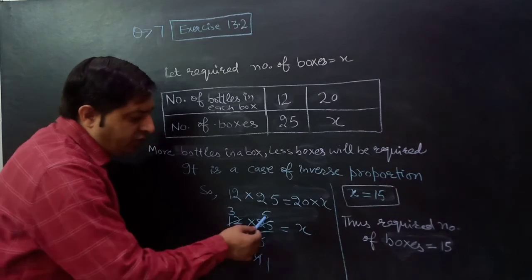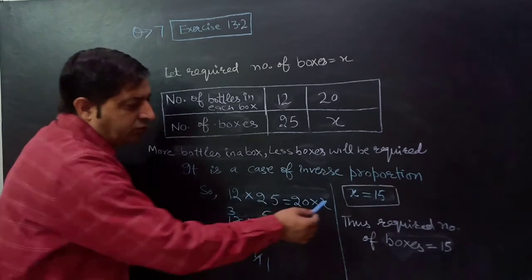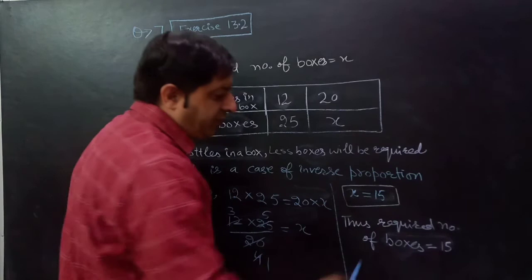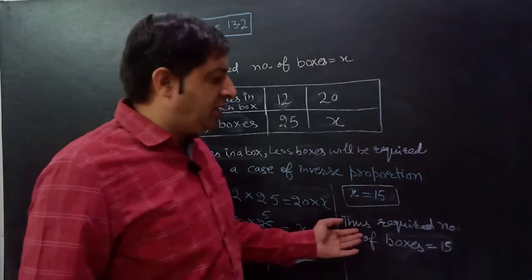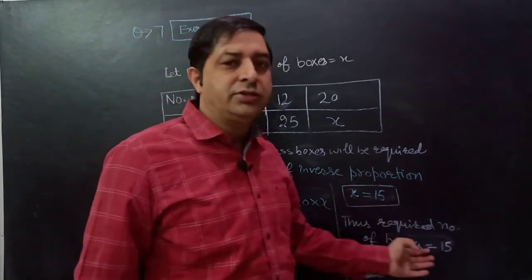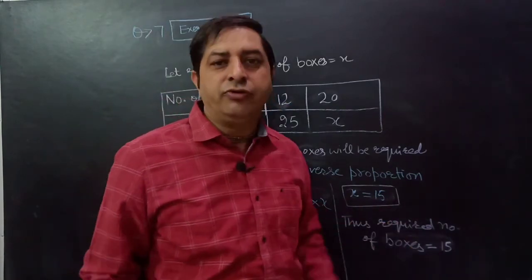After cancellation, 3 into 5 is equals to 15. So x is equals to 15. Thus the required number of boxes is equals to 15.